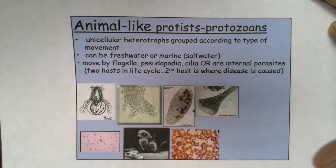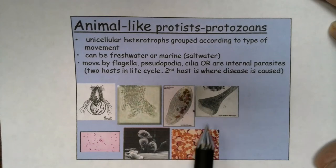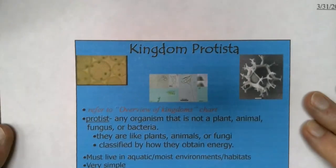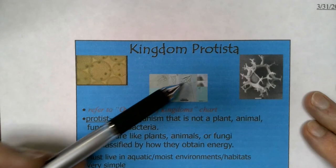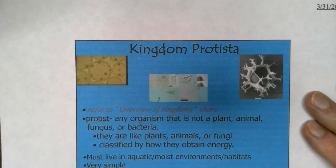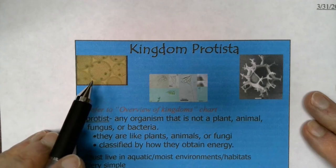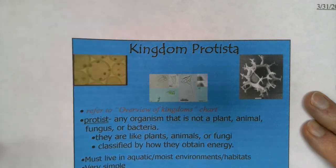Or they move by cilia. You can't really see the cilia, but there are cilia surrounding this paramecium and surrounding the opening to that funnel-shaped structure — this is known as stentor. There are also cilia that line the bell shape on this particular protist known as vorticella. And this one is called volvox — each of the little colonies that make up a circle of volvox have two flagella that beat. Volvox is actually plant-like, not animal-like.